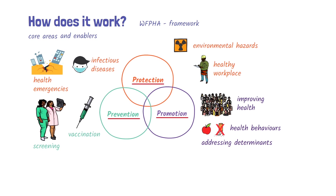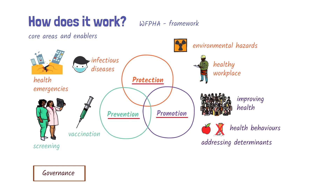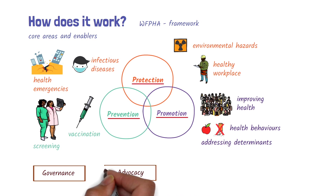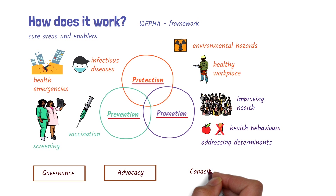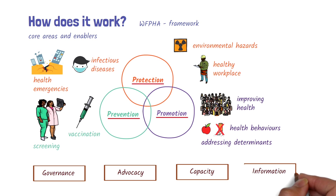To enable these core areas to function, there needs to be good governance. Advocacy — to influence and obtain support and commitment for actions that support a health goal. Capacity — having an adequate, well-trained, and supported public health workforce. And having accurate, timely information to support health actions, such as relevant research, surveillance, monitoring, and evaluation.